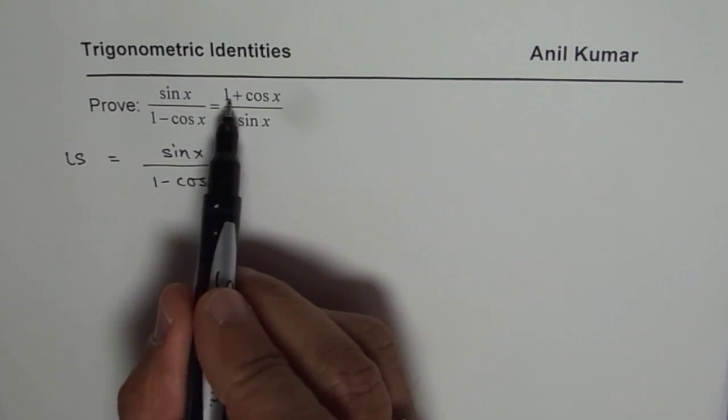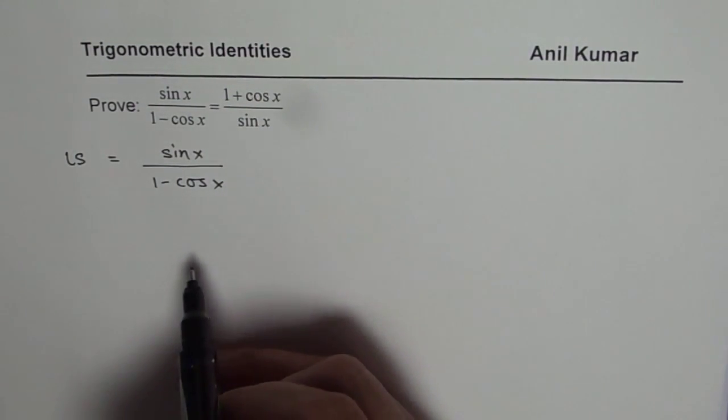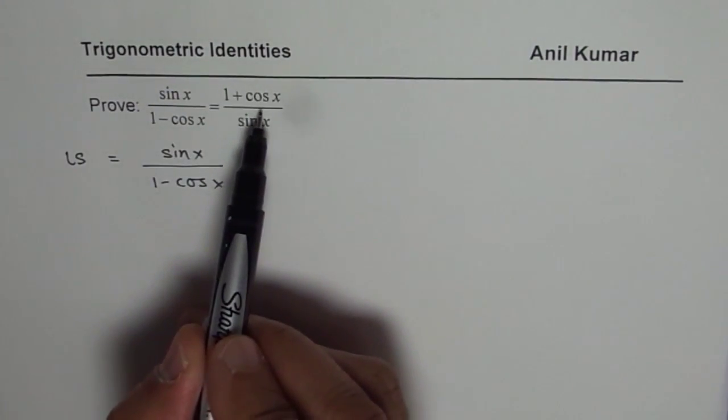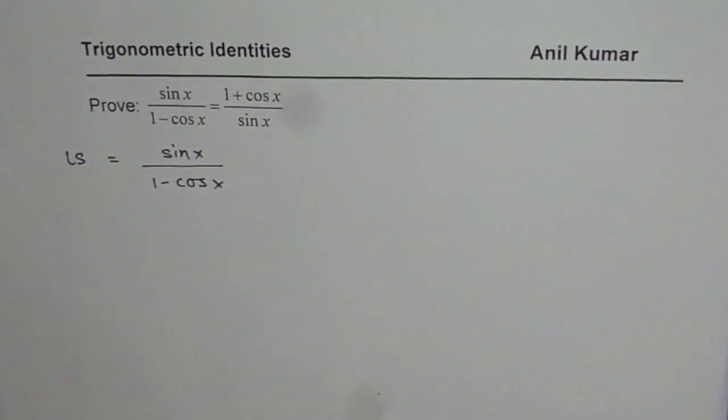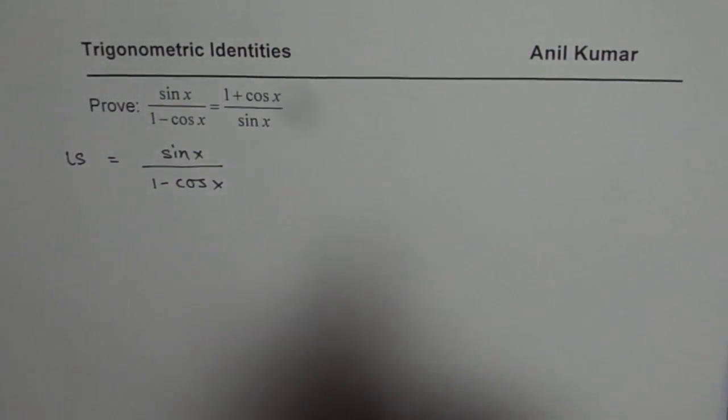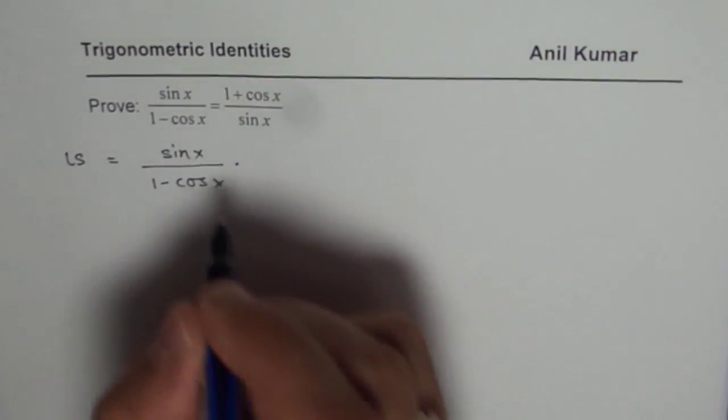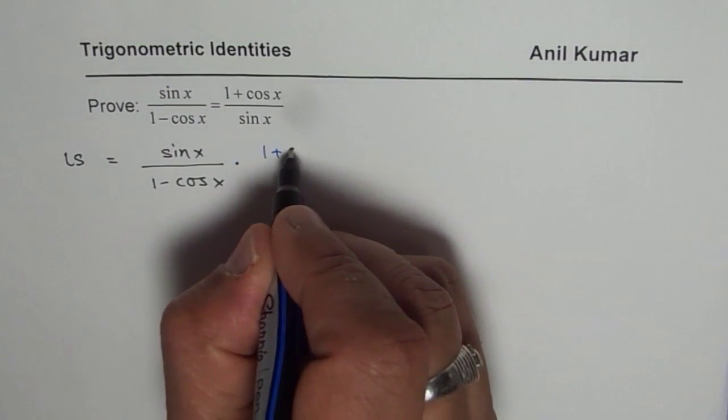Somehow, we need 1 plus cos x in the numerator. So, always see what you need to prove, right? You need to prove 1 plus cos x divided by sin x. Now, easy way to get that 1 plus cos x is to multiply this expression by 1 plus cos x.